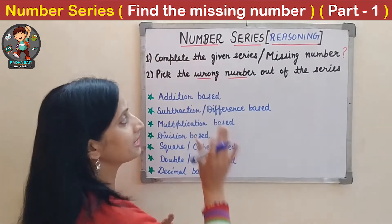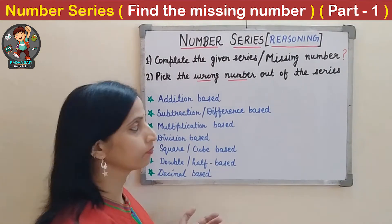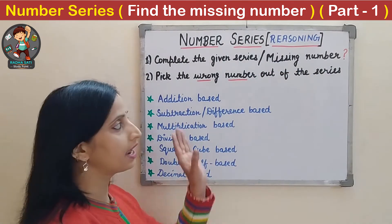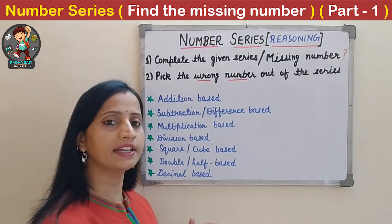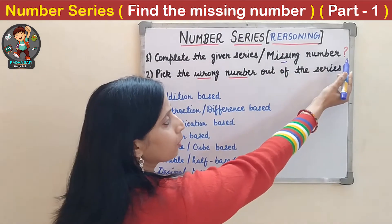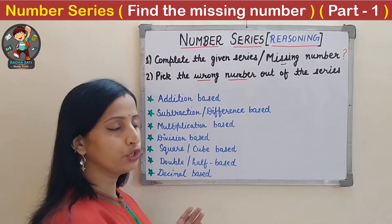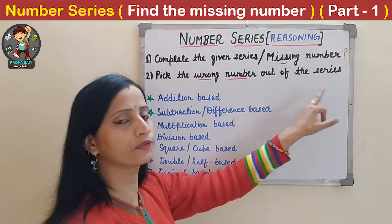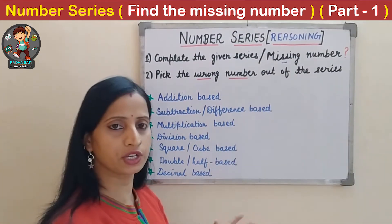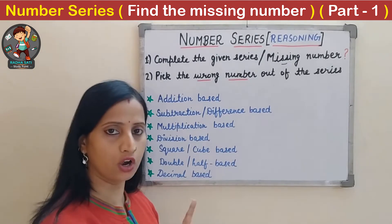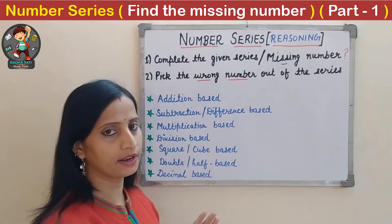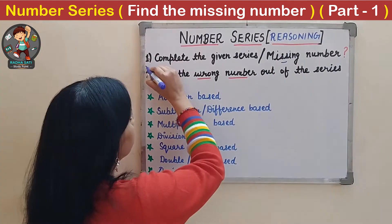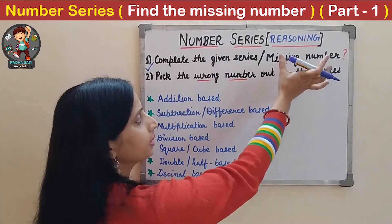From number series, basically two types of questions are asked in exams. The first type is 'complete the given series' or 'missing number' — a number series will be given with one number missing, and you have to find that missing number. The second type is 'pick the wrong number out of the series' — you have to identify the incorrect number. In today's video, we will discuss only the first type: find the missing number.